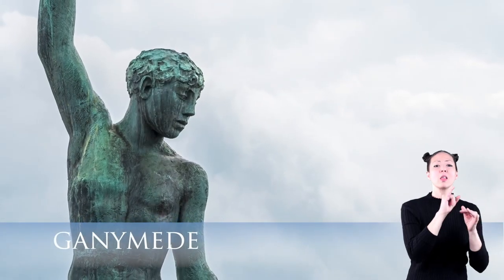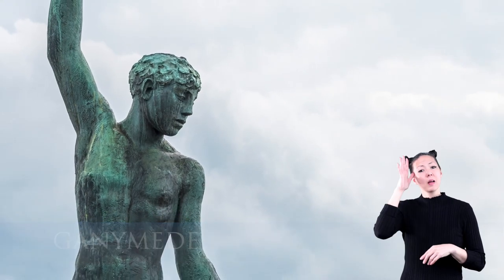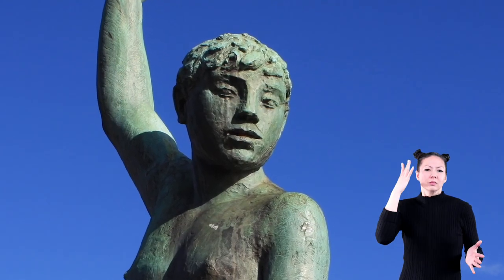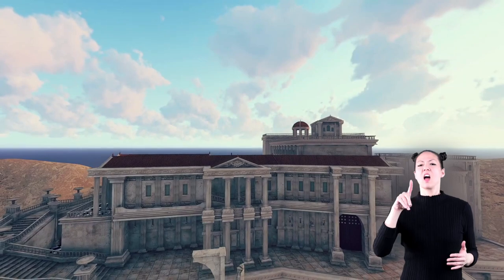The myth related to the constellation Aquarius is about a man named Ganymede, who lived on Earth. Ganymede was very handsome and the king of the gods, Zeus, noticed him.